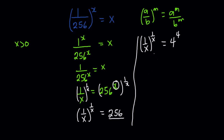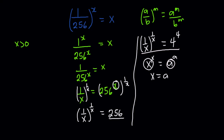The principle says that if you have x^x equal to a number raised to the exponent of itself — that is, a^a — then x is equal to a. So if x^x = a^a, then x = a.